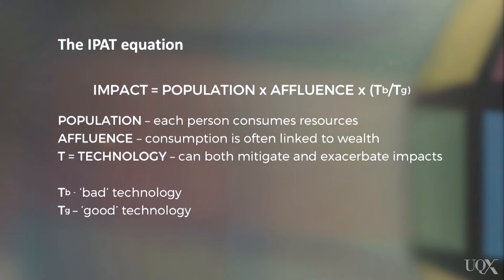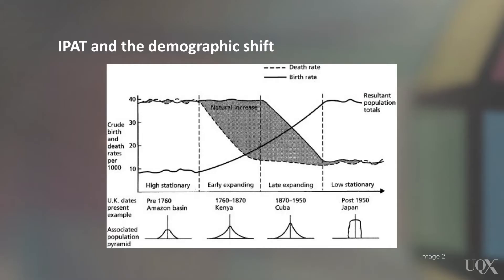Technologies that are increasing resource consumption without increasing resource efficiency are bad, whereas technologies that can help us manage population and consumption impacts are good. The timeline here shows us how population growth has evolved with human development and reveals the impact of healthcare technologies as well as changes in human reproductive behavior as a result of modernization.